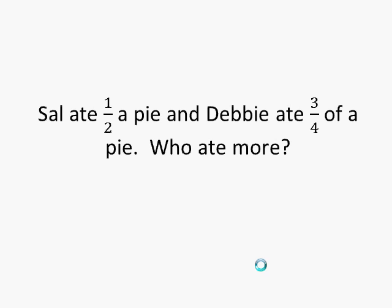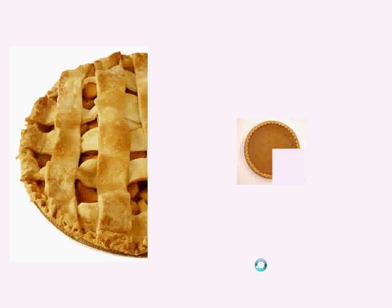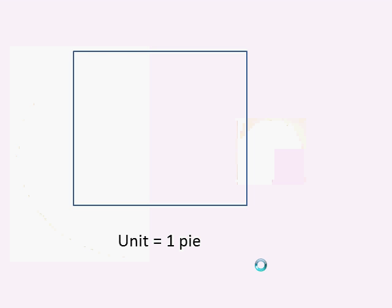So here's another question you can pause and think about. Let's say Sal ate half a pie and Debbie ate three-fourths of a pie. Who ate more? Well, Sal did because he ate one half of this really big apple pie and I ate three-fourths of this mini pumpkin pie. Did I? Three-quarters. I'm not sure what I just said.